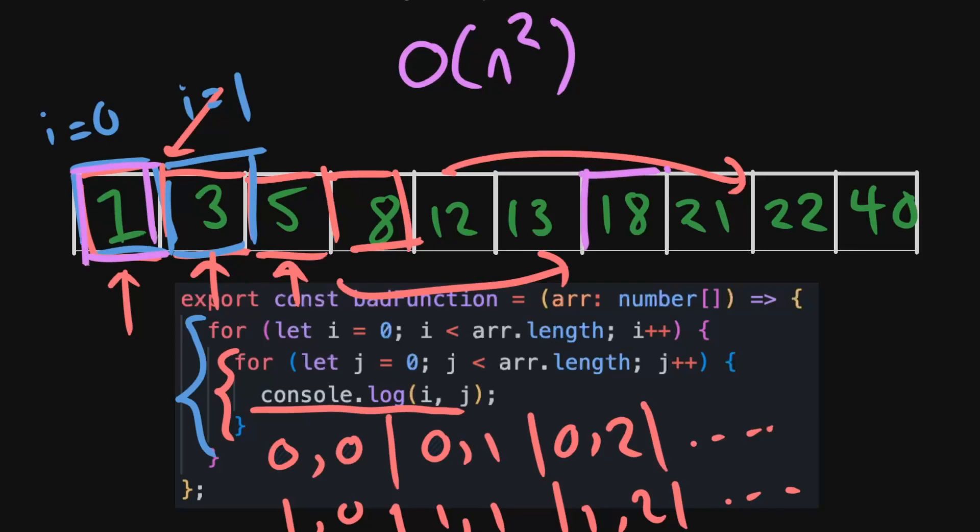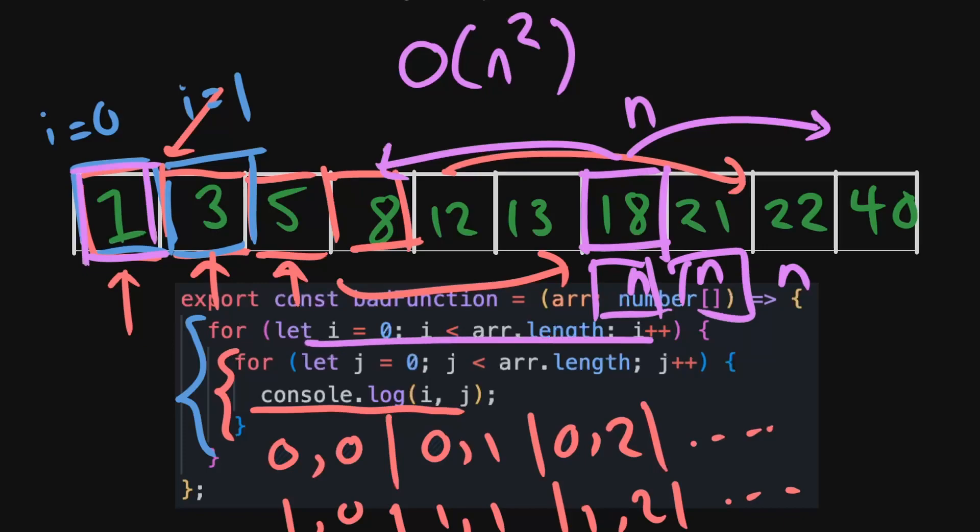So you can see that for every element in the array, let's actually start over here so you can see what I'm doing. We're going to have to do the number of elements in the array. So this will be n operations. So here we'll have n operations, here we'll have n operations, here we'll have n operations. And then the number of things that we're doing is also n, so we'll have n times n complexity. So I end up with O(n) times n, which is also written as n squared.